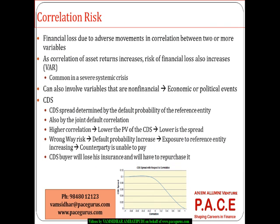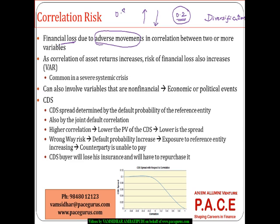What is correlation risk all about? In the financial world, we observe that because of adverse movements in the correlation between two or more variables, there is a financial loss. For example, if the correlation between two assets is much lesser — say 0.2 — portfolio management says they form a good portfolio offering diversification and reducing portfolio risk. But as time progresses, the correlation between them could improve and increase to 0.8.